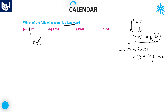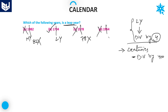The last two digits of option A are 82 — not divisible by 4, so eliminate it. Option B has last two digits 04, and 4 is divisible by 4, so 1704 is a leap year. Option C has last two digits 78 — not divisible by 4. Option D has 54 — also not divisible by 4. So all options except B are not leap years, and the answer is option B, 1704. I hope you enjoyed the session, thank you very much for watching.